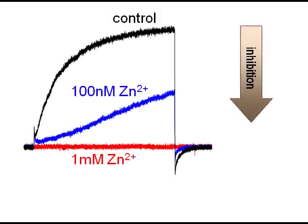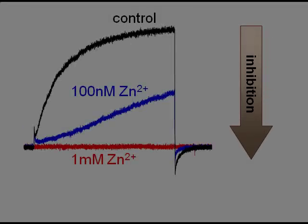Further study revealed that this sperm proton conductance is potently inhibited by zinc. The highest concentration of zinc in the human body, about 3 mM, is present in male seminal plasma, and therefore this seminal zinc can prevent premature activation of the sperm cell by inhibiting proton conductance.